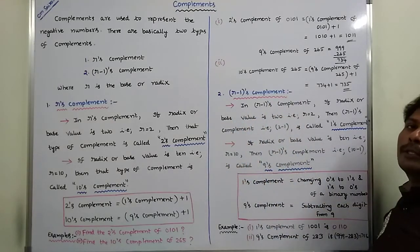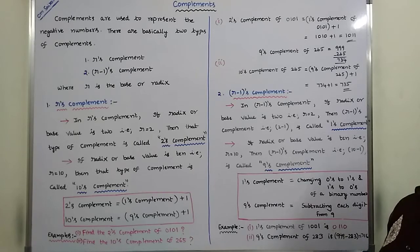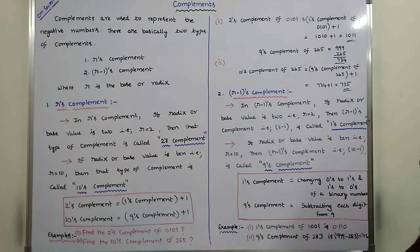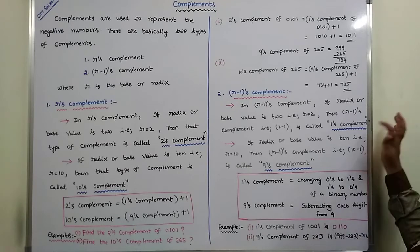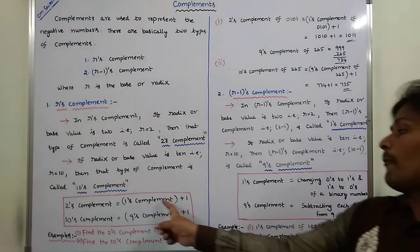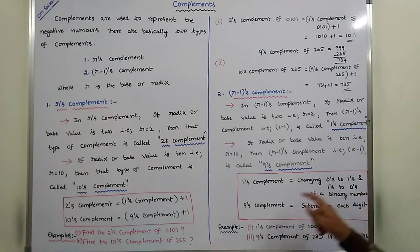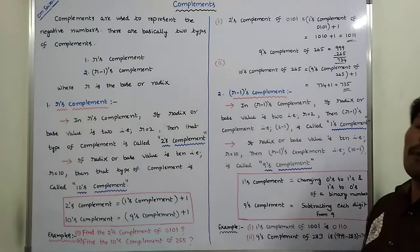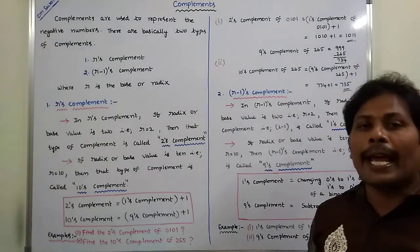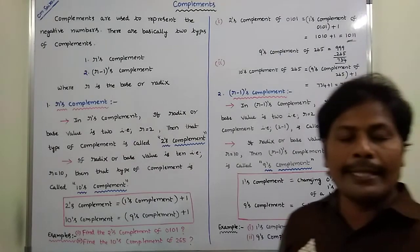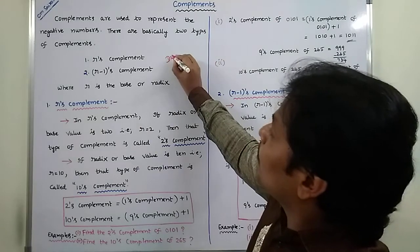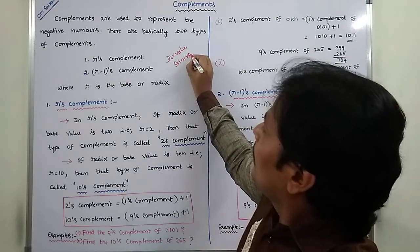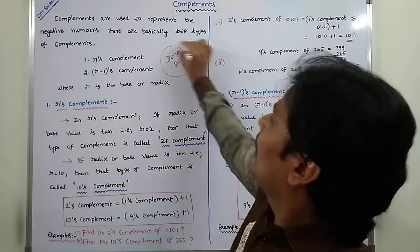So this is the introduction about complements — what is the purpose of complements and what are the types. In R's Complement, there are two types: 2's Complement and 10's Complement. In R-minus-1's Complement, there are two types: 1's Complement and 9's Complement. We covered the formulas and example problems for both. Thank you for watching this video. If you like this video, please share it with your friends and classmates and subscribe to my channel.